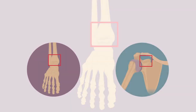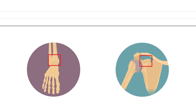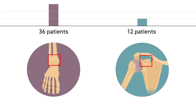To reach this conclusion, the team retrospectively reviewed the radiographic findings from 36 patients who underwent tibial allograft and 12 patients who underwent coracoid autograft procedures to manage anterior shoulder instability with glenoid bone loss.